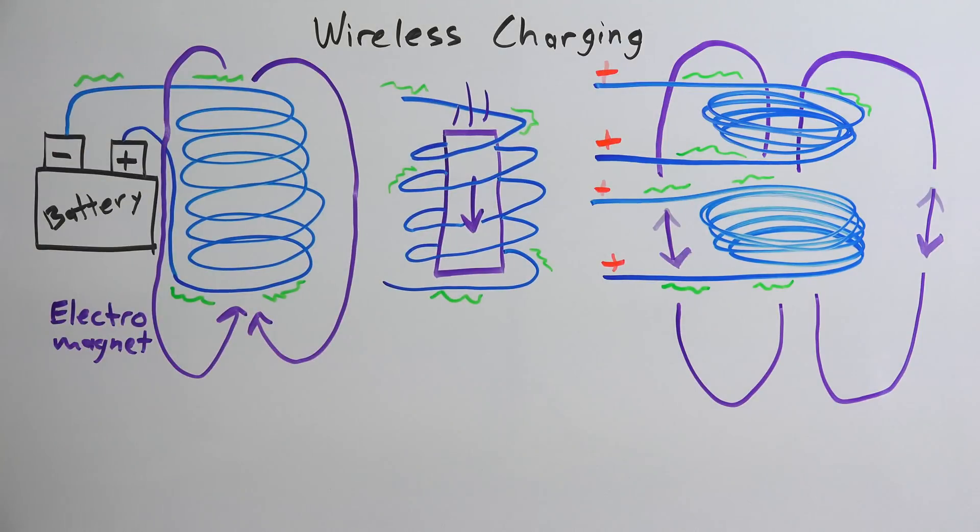Typically, this will be done with an alternating current, so the magnetic field of the first coil will switch back and forth inducing an alternating current into the second coil. With no physical connection, you're able to supply a current to charge a device.